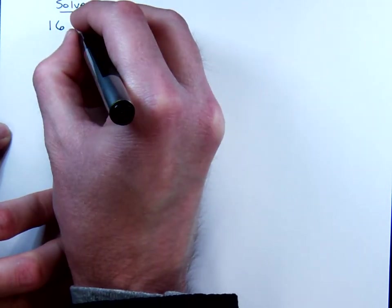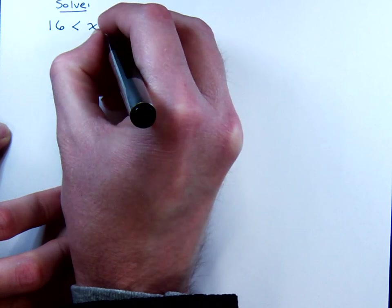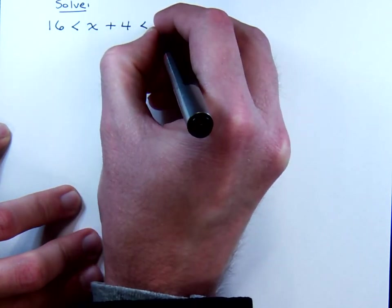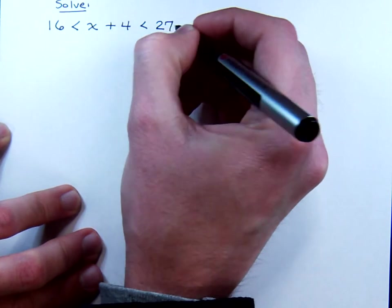Let's try to solve this guy. 16 is less than x plus 4, which is less than 27.